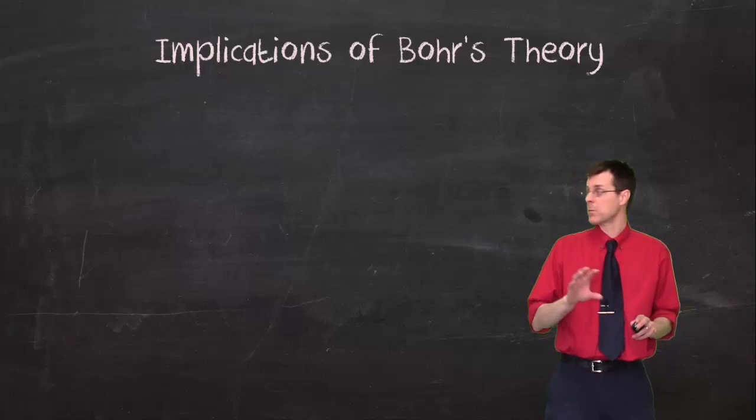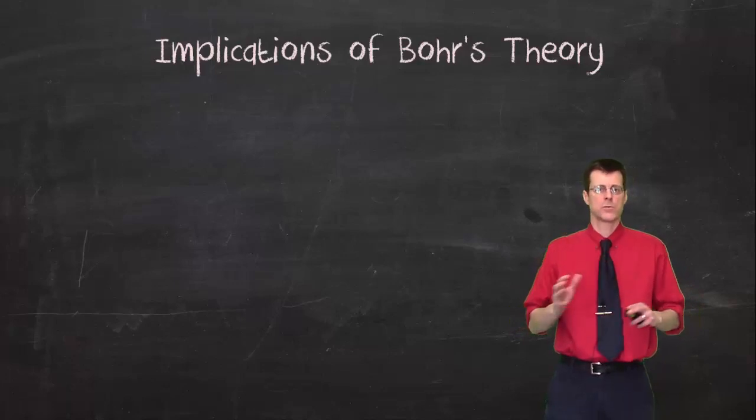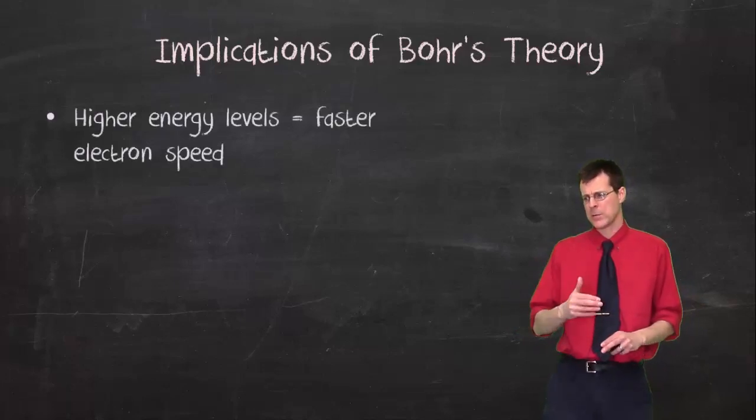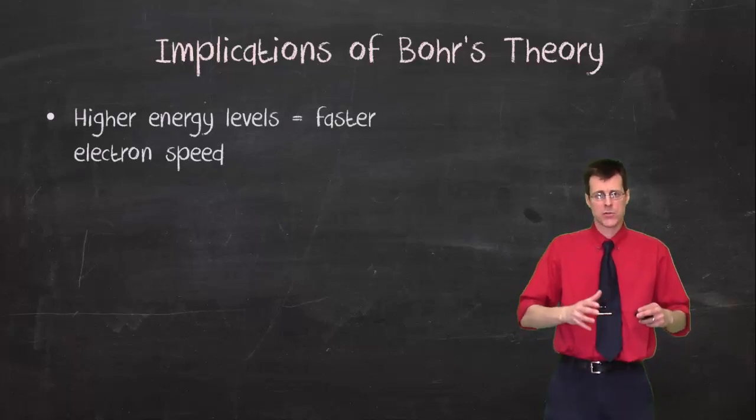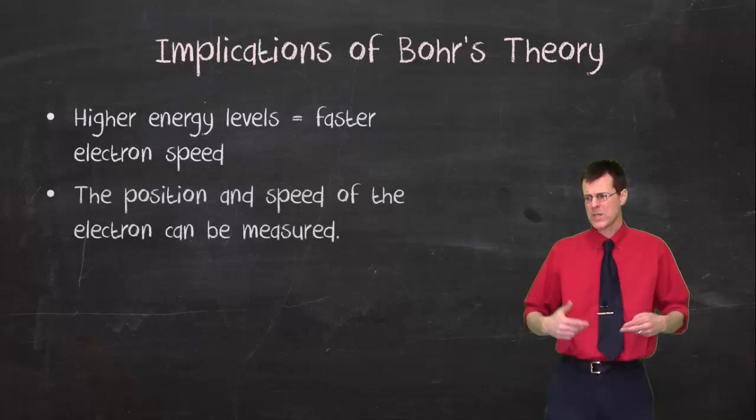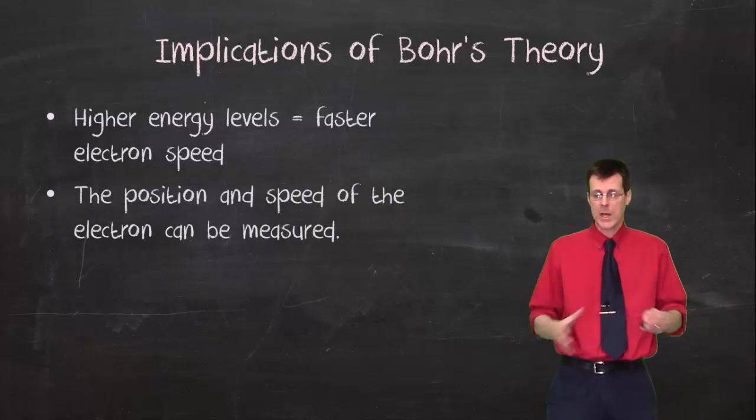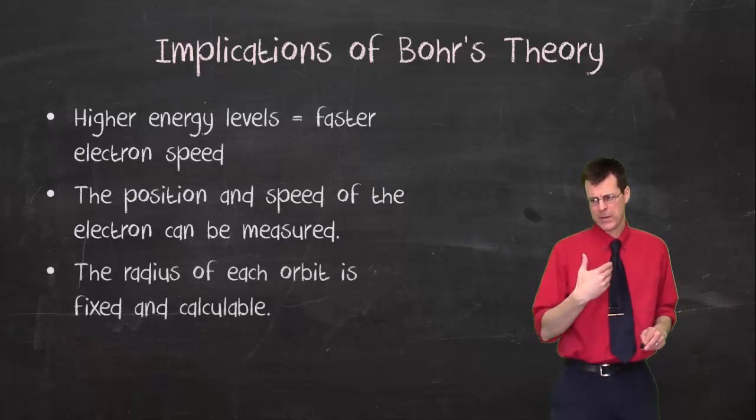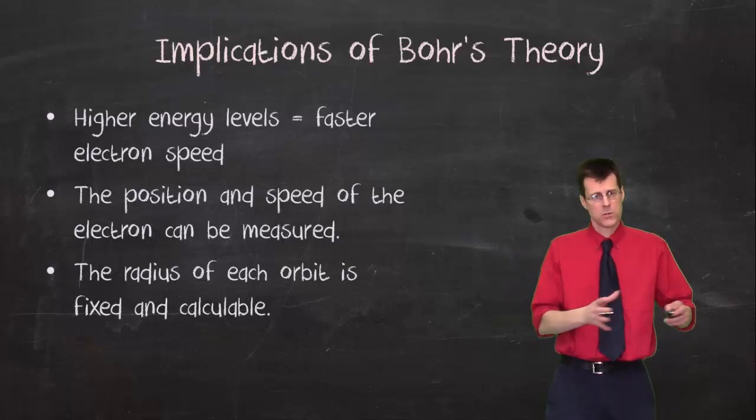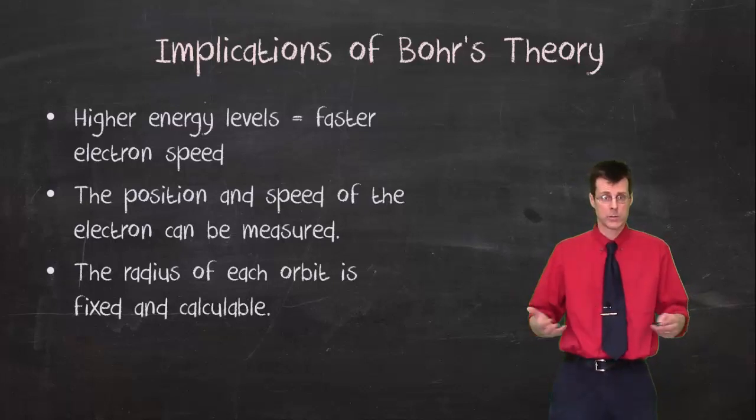There were some implications of Bohr's theory. And this is one of the places where Bohr's theory falls apart, where it doesn't do a very good job of explaining. Number one is that electrons at higher energy levels had to be moving at faster speeds so that they could get around the orbit. Second thing is that it meant that we should be able to calculate both the speed of the electron, if we know its energy, and how far away from the nucleus it should be. The radius of the orbit should be fairly fixed, because as soon as the radius changed, then the energy should be changing as well.